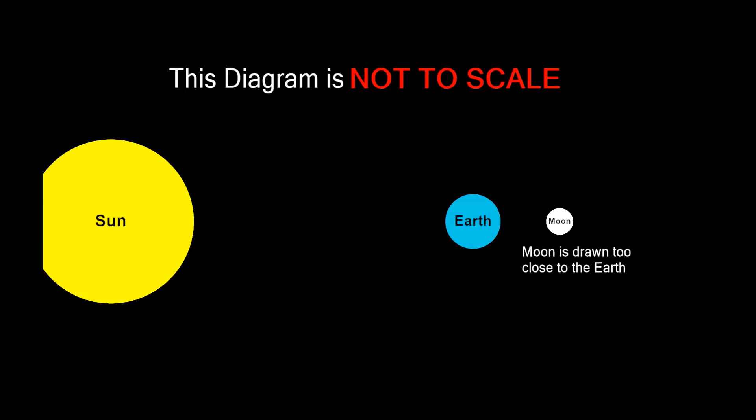Almost always, the moon is drawn too close to the earth, and it seems very likely that the large earth could block the light from the sun.